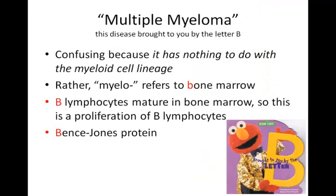Here's something confusing: there's a disease called multiple myeloma that has nothing to do with the myeloid cell line despite its name — it's a disease of too many lymphocytes. Multiple myeloma reminds me of the Muppets — lots of M words. It's brought to you by the letter B. Myelo means bone marrow, which starts with B. It's an overproduction of B lymphocytes, and those abnormal B lymphocytes make Bence-Jones protein, an aberrant type of antibody whose eponym also starts with B.